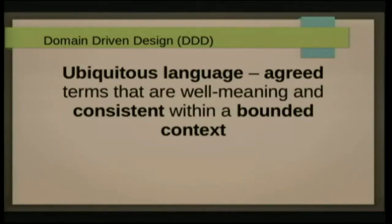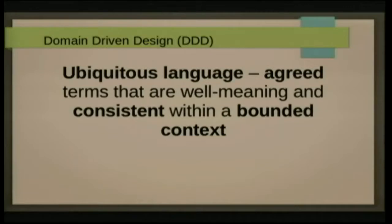Another thing they talk about is ubiquitous language - this is some of the terminology, some of the language games that come out of domain-driven design. Ubiquitous language means agreed terms that are well-meaning and consistent within a bounded context. Agreed is important: it means that between myself and somebody in the business or marketing, we use the same word - we agree on it and stick to it. It's consistent, so the word is the same in my code as the one I've used talking with marketing. It sounds like a really simple thing, but it's actually interesting how often that's difficult.